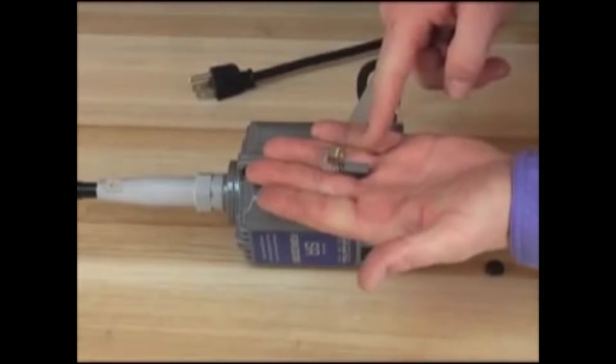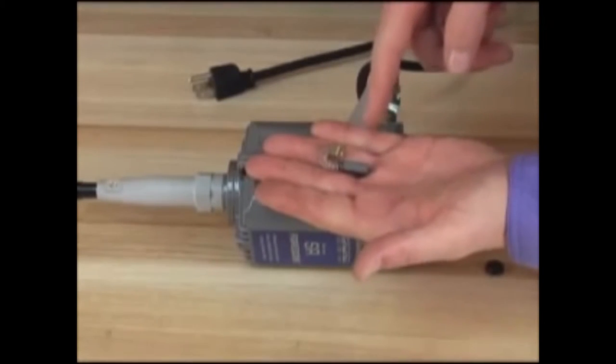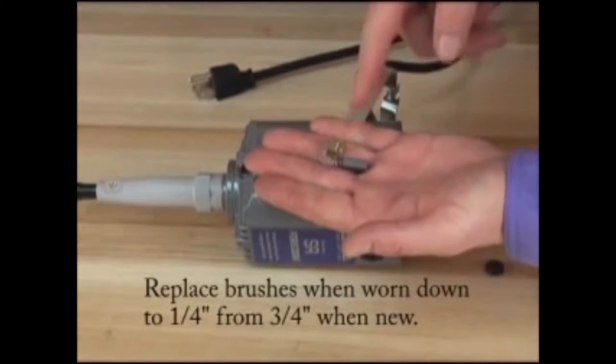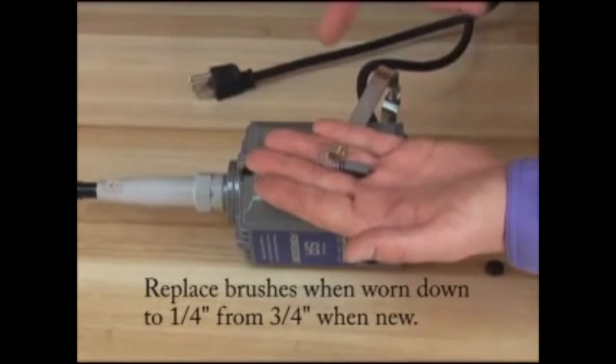This little carbon thing here wears down. When it's brand new, it's about three-quarters of an inch long. When it gets to one-quarter of an inch or lower, you need to replace it. It's best to replace both of them at the same time, whether the other one needs it or not.